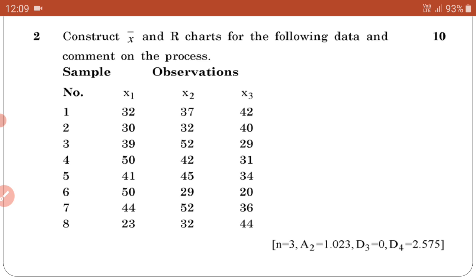One thing is also remember. A2 as per the given 1.023. D3 is 0 and D4 is 2.575. As per the given here, this value we are using in the formula. Then apply this formula. Next step.